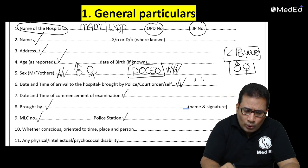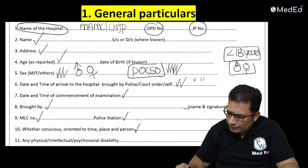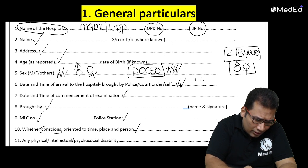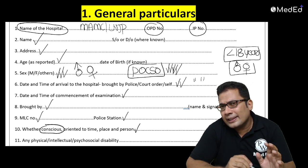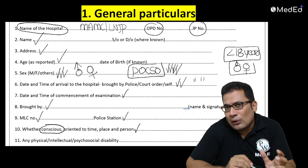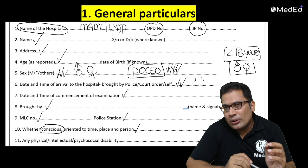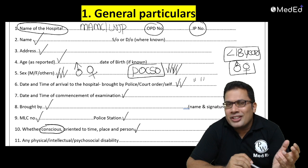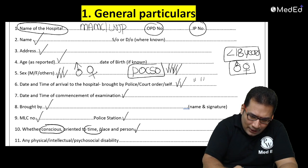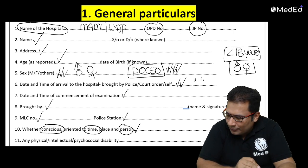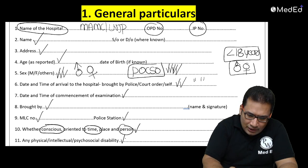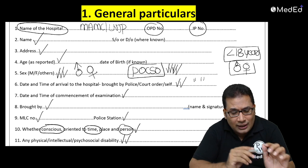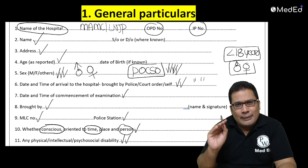Record whether the accused is conscious and oriented to time, place, and person — this is very important as consciousness matters a lot when taking consent. Proper consent must be taken only from a conscious, oriented person. Also note any physical, intellectual, or psychosocial disability, or any personality disorder if present. These are all part of the general particulars.